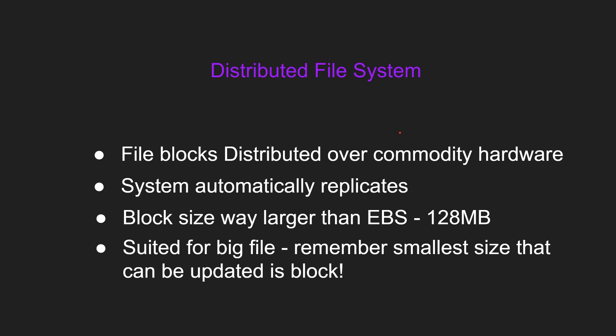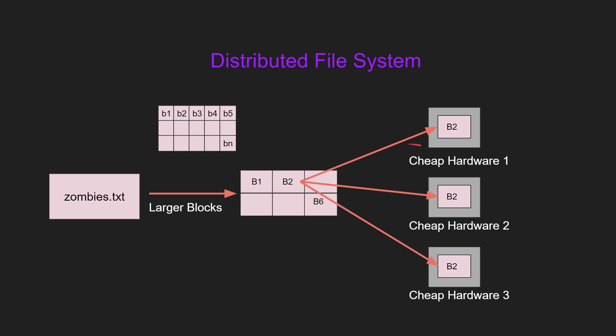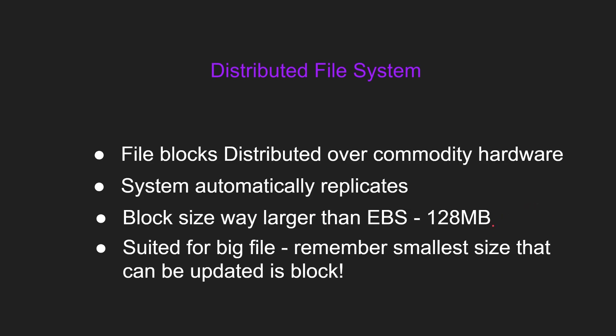A couple of points about DFS: file blocks are distributed over commodity hardware — that's why the name distributed file system. The system automatically replicates; in this case, each block is replicated three times, also known as replication factor, which is three by default but can be changed. The block size is way larger than EBS — each block by default is 128 megabytes — and it is suited for big files. Remember, the smallest size that can be updated is a block, so if you update one megabyte, it still has to update that 128 megabyte block.